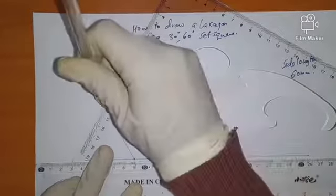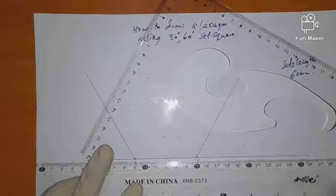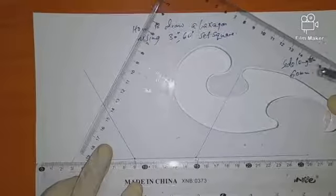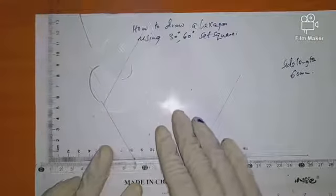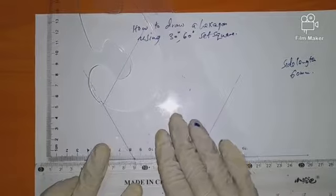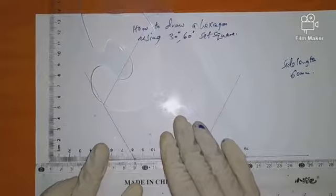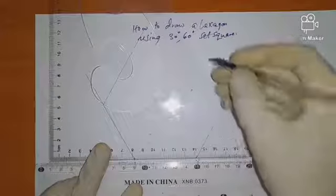So you draw it. Then you rotate, and you rotate again. You rotate, then you look for this line again, and then you draw this line again.